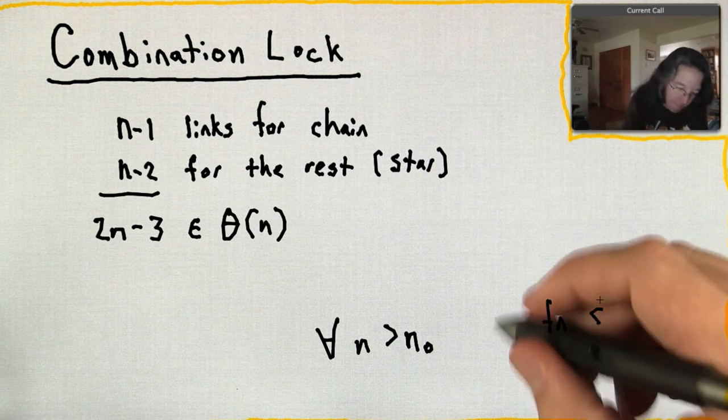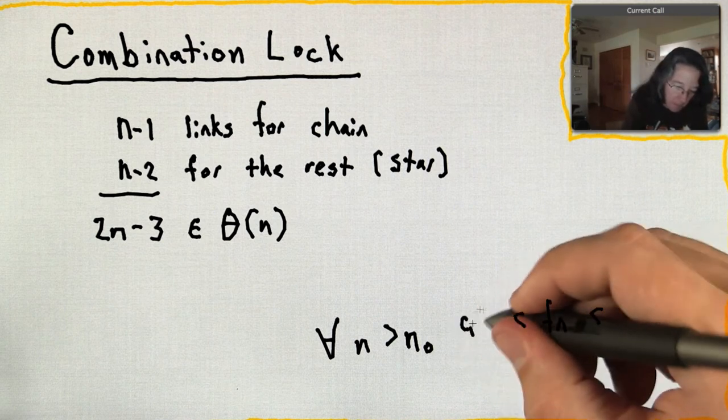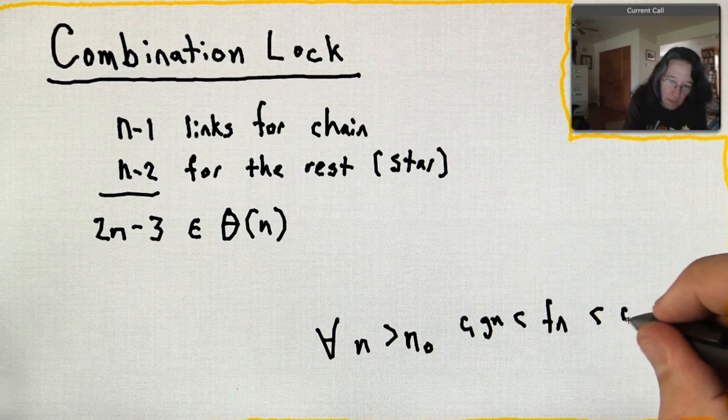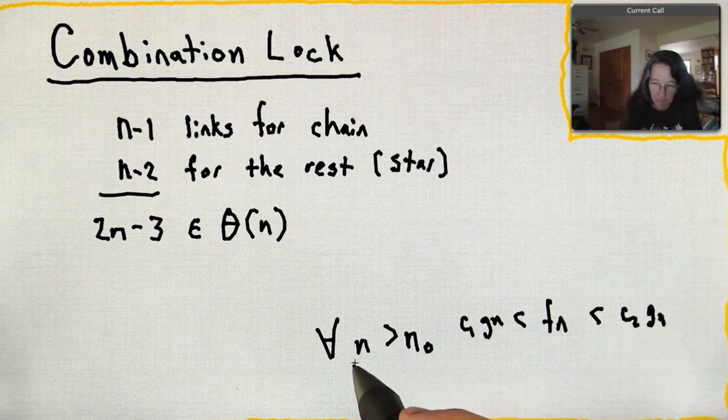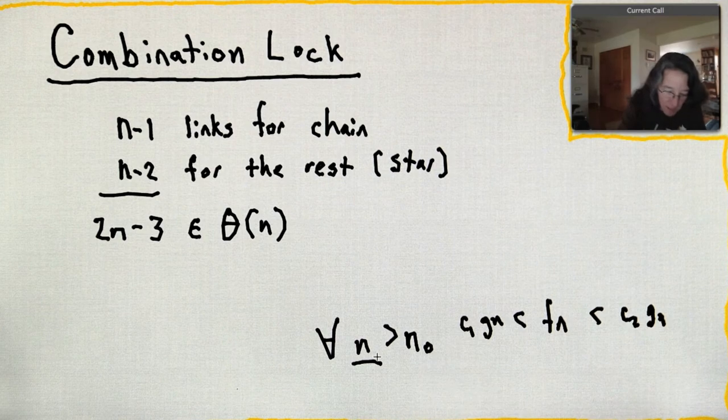Yeah, part of the definition is, for all n greater than n-naught, right, you have f of n is less than c1 of g of n, c2 of g of n, and it's this part right here.